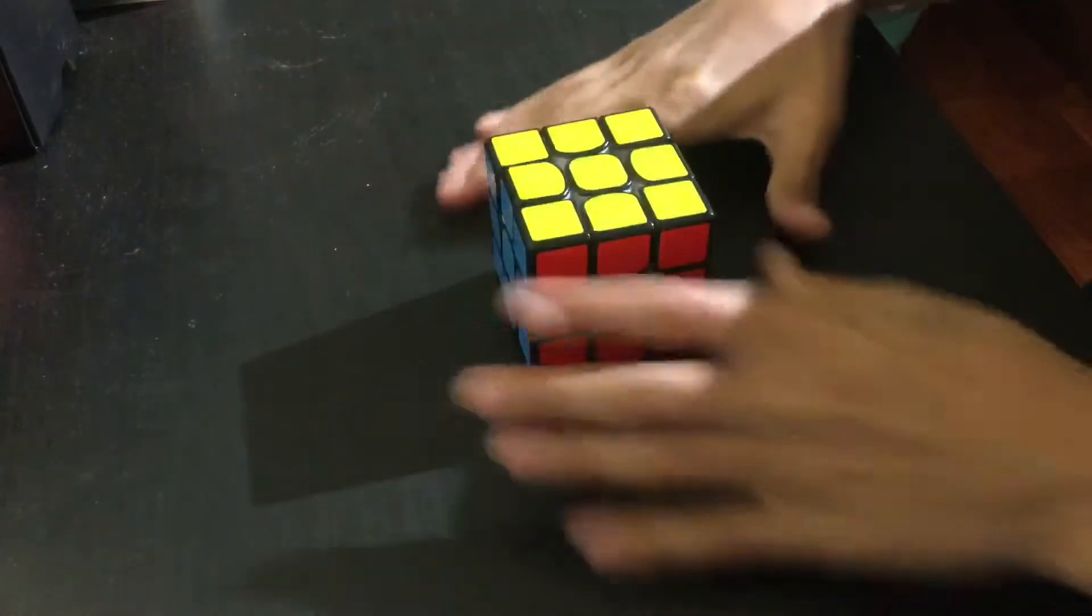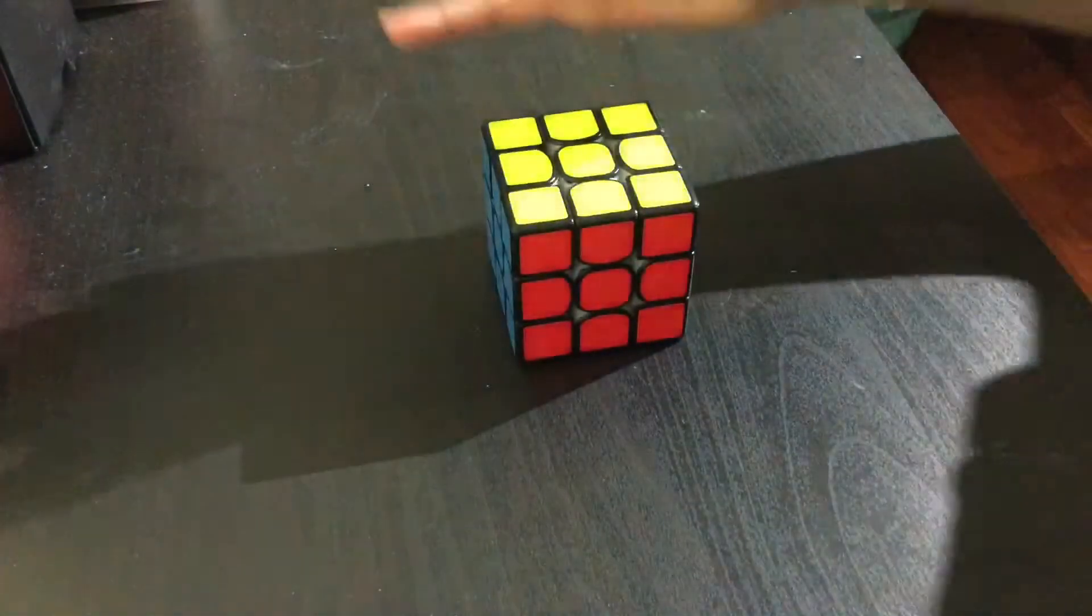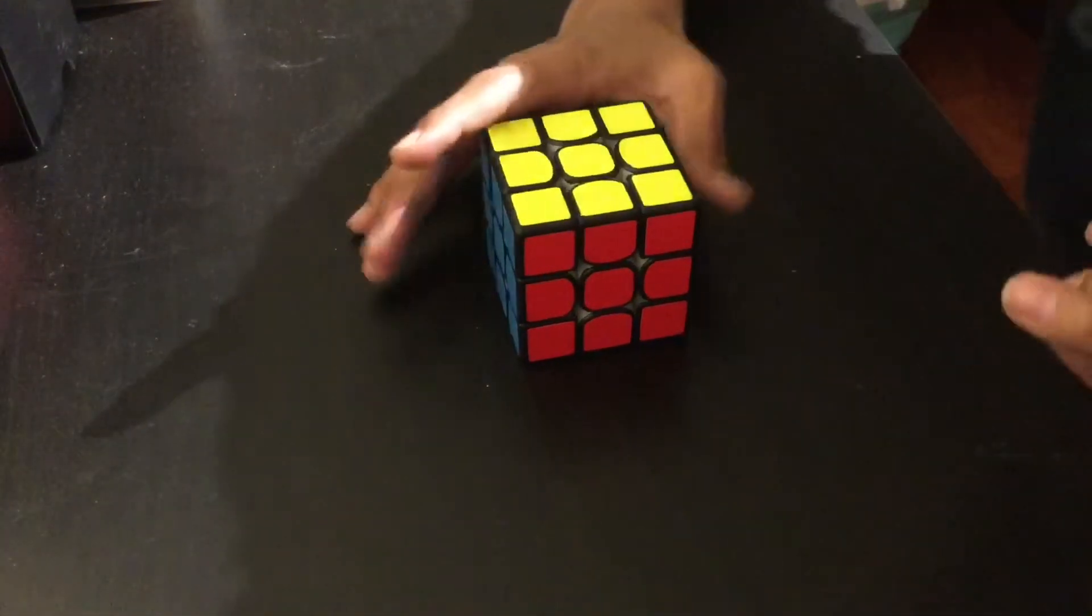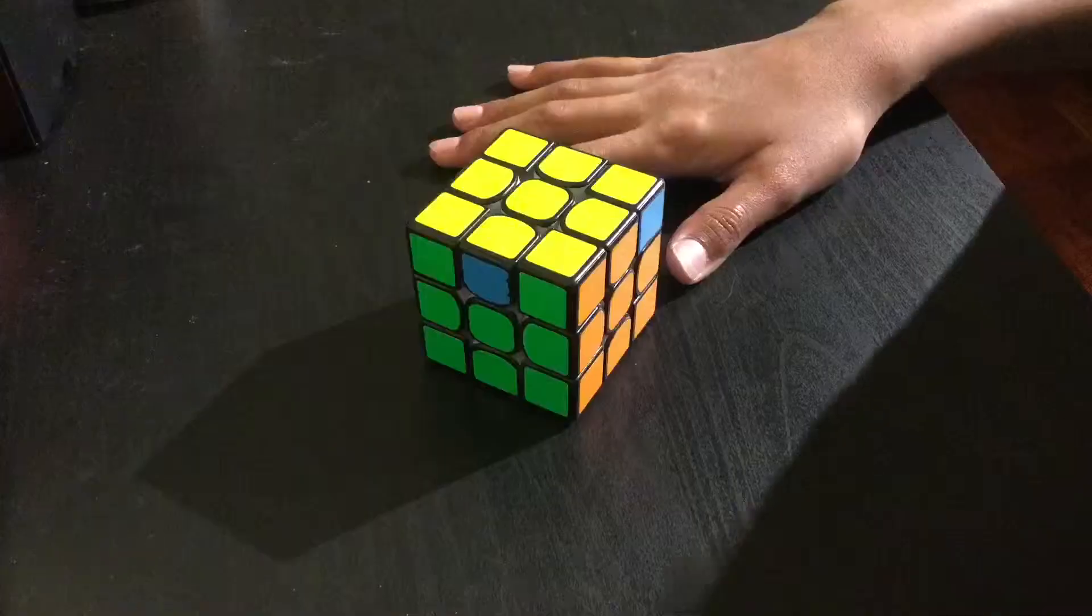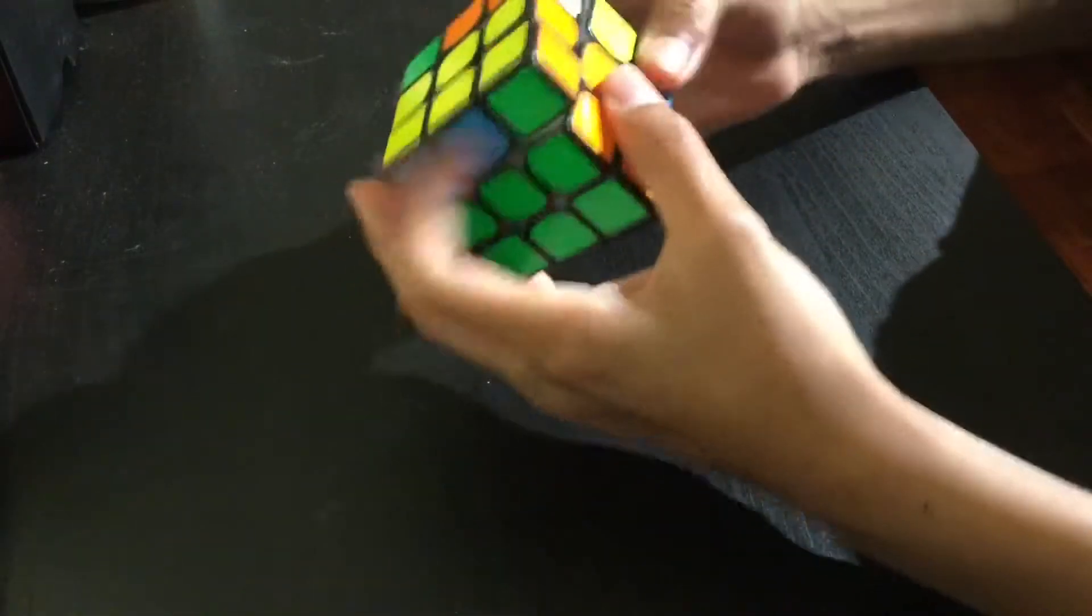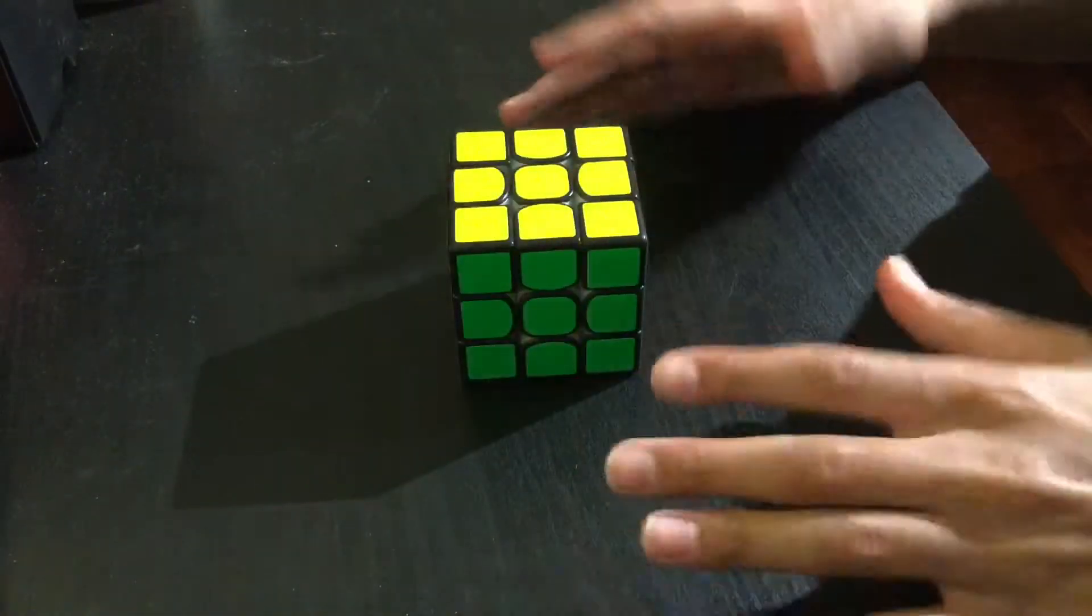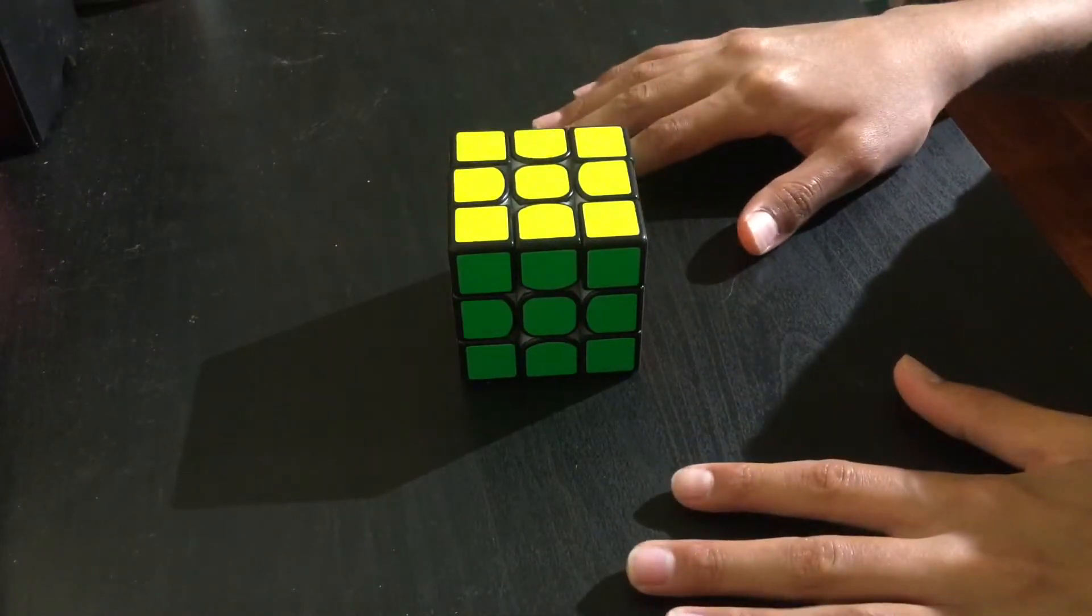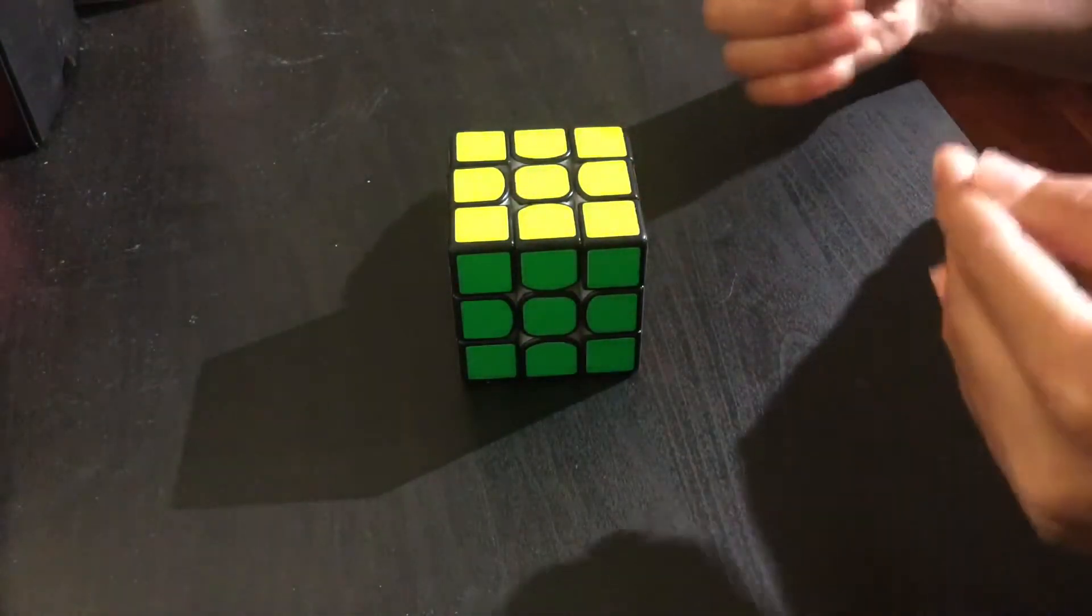Now this is something I need to work on as well, so the way I work on this is by doing something called PLL time attacks. A PLL time attack is when you execute all 21 PLLs as fast as you can and time that. A good PLL time attack is when your time is about three times your average.